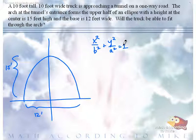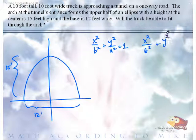What's our A? Just 15. What's our B? Six. Because the minor axis is 12 feet long, so half of that would be six. So our equation would be x squared over six squared plus y squared over 15 squared equals one.